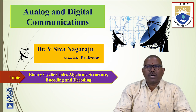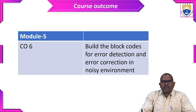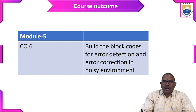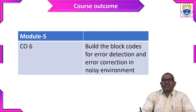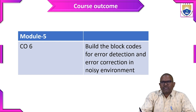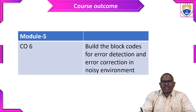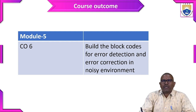Let us come to the course outcome. The cyclic code comes under CO6, that is course outcome 6, and this topic will come into module 5. CO6 says: build the block codes for error detection and error correction in a noisy environment. Before this class we discussed block codes. Whatever may be the block codes or cyclic codes, they are used for error detection and error correction.